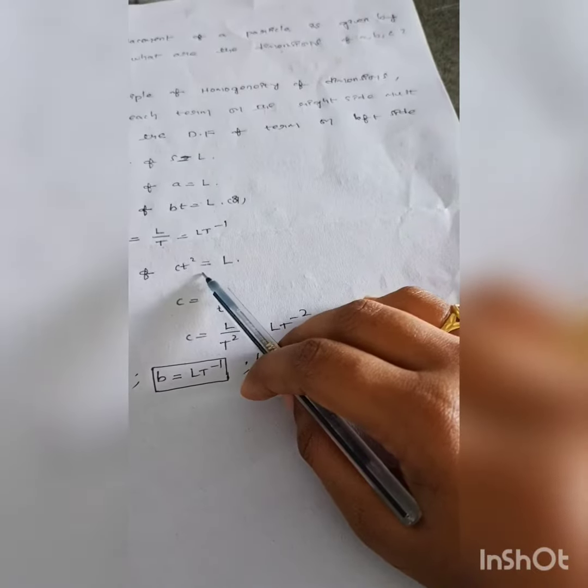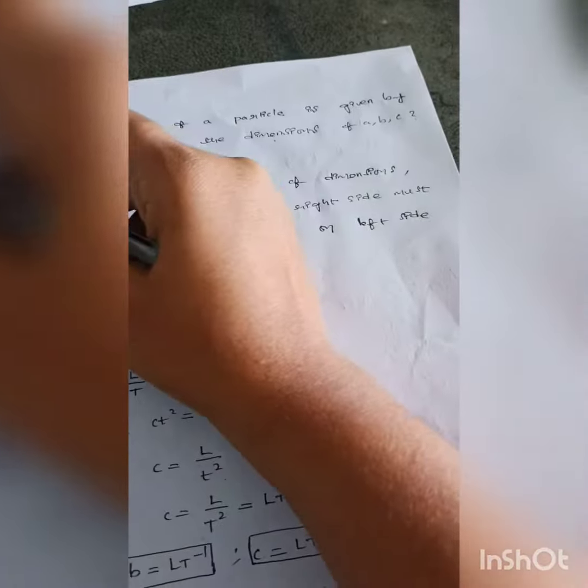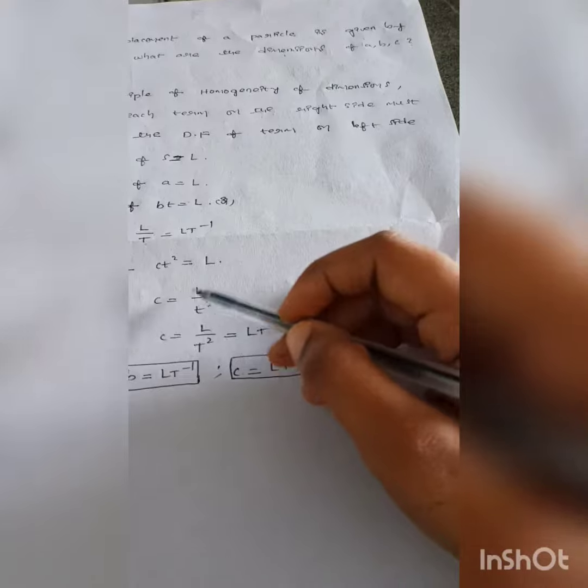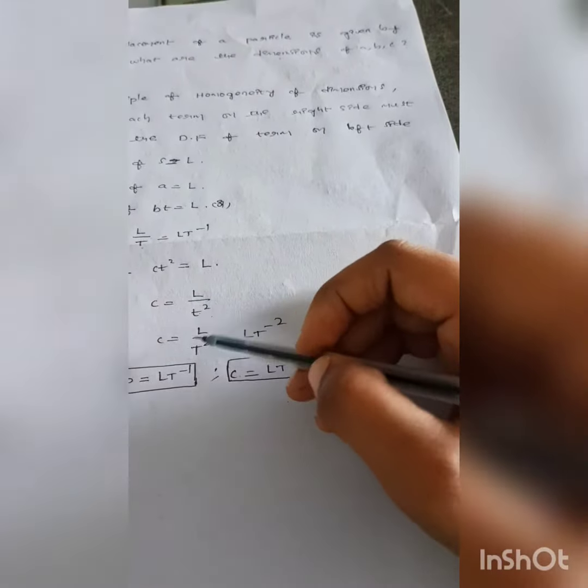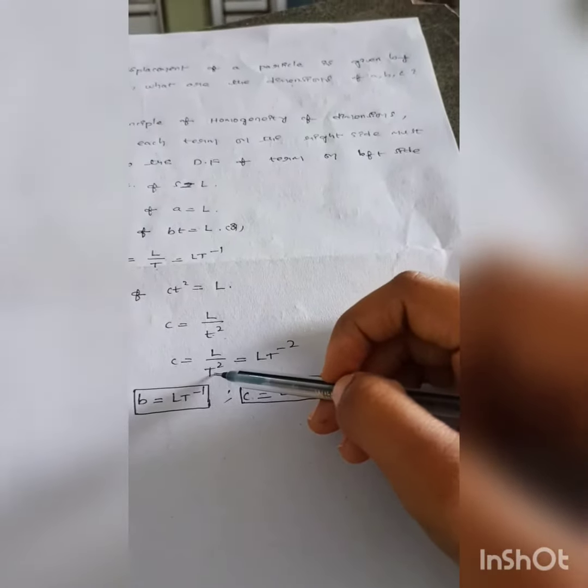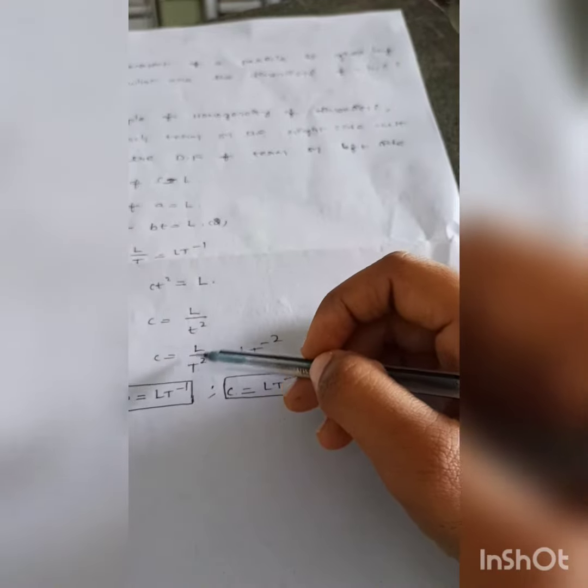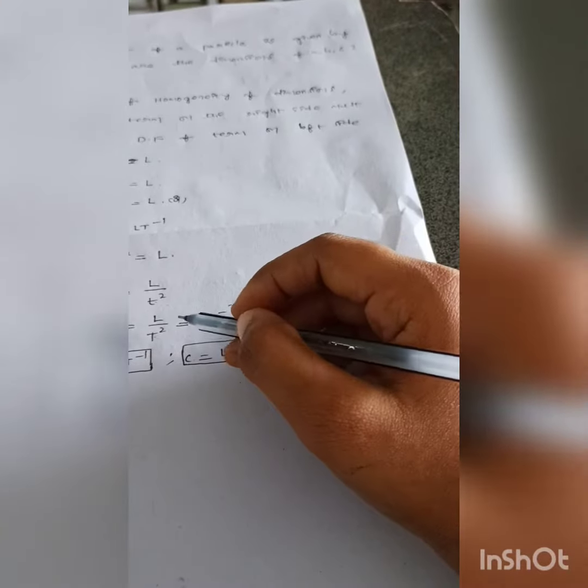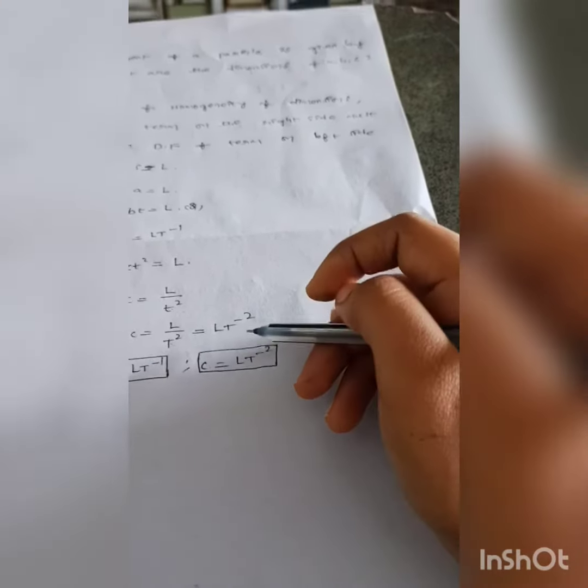Dimensional formula of ct squared is equal to s. s means dimensional formula of s is L. c is equal to L by t squared. The dimensional formula of T squared. Therefore, dimensional formula of c is L t to the power minus 2.